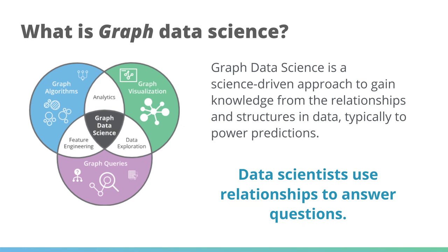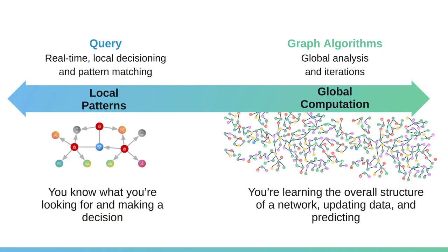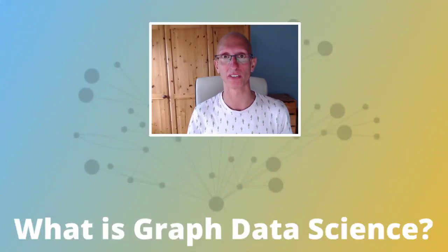Or finally we could be using a graph algorithms approach if we want to find out something across the whole graph, and we could use that as part of an analytics approach or feed it in as a feature as well. Generally, graph analytics approaches fit across a spectrum from local pattern-based approaches to global computation approaches. On the local side, we know what we're looking for and we're working on a very narrow part of the graph, whereas on the right-hand side with the graph algorithms approach, we may not know what we're looking for but we're trying to understand the overall structure of the network — like what clusters are in there, or who are the important nodes — doing more of a global analysis.